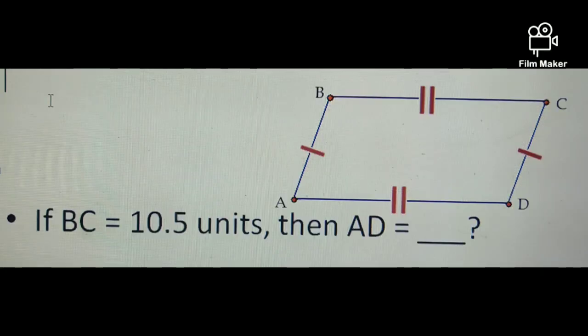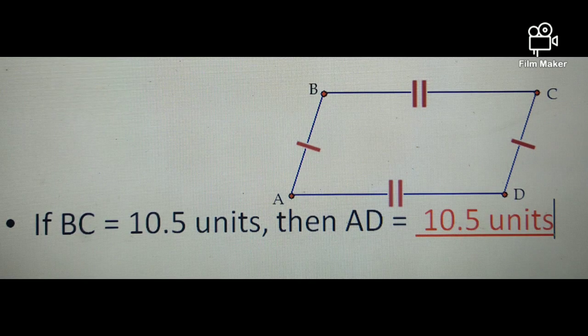Another example is this one. If side BC is equal to 10.5 units, then side AD would be equal to what? Since AD is the opposite side of BC, then automatically side AD will also be equal to 10.5 units.